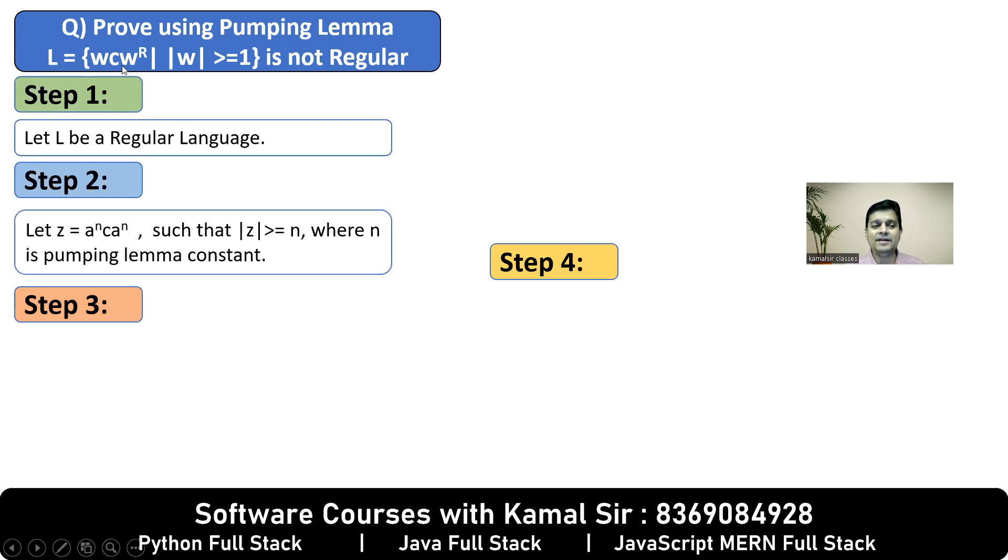Step number two. Since your pattern is WCWR, I've selected A^N C A^N. You can make any other selection also, like if you take B^N here, then B^N here. Whatever it is, its reverse. So A^N's reverse is A^N, 2A's reverse is 2A, 3A's reverse is 3A, simple.